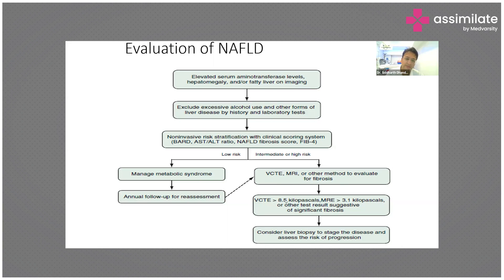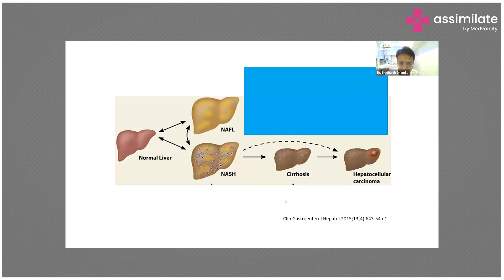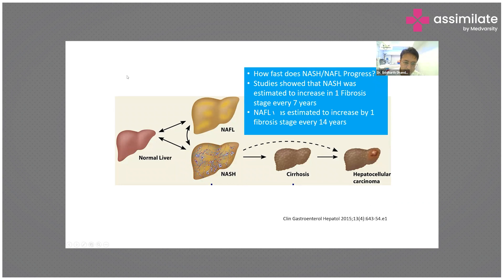This algorithm is important because of the natural history of the disease. The key question is: how fast does NASH progress? The rate of progression is usually double in NASH compared to pure fatty liver. This is why identifying and treating patients who have NASH is so important.